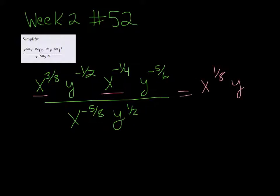And I'm going to do the same thing with the y's. So I'm going to add the negative 1 half plus the negative 5 sixths. And my calculator tells me that's a negative 4 thirds.